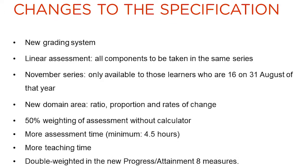What's new about GCSE Mathematics? There is a new grading system, where pupils will get a grade between 1 and 9. The assessments are linear — all components have to be taken in the same examination series. The November series is now only available to those learners who are 16 on the 31st of August of that year.